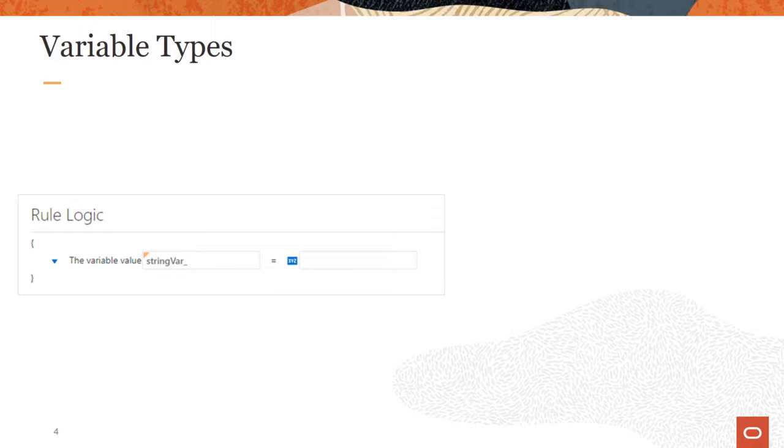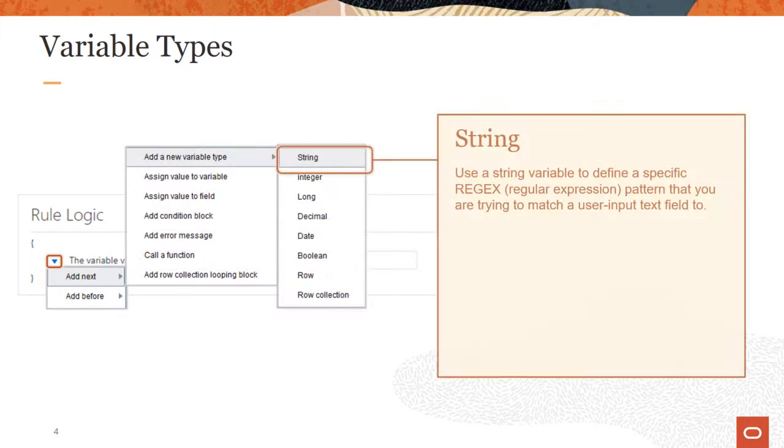There are several different variable types you can add. Some examples include string which you can use to define a specific regular expression pattern to match a user input text field such as phone number, address lines, name, and so on.